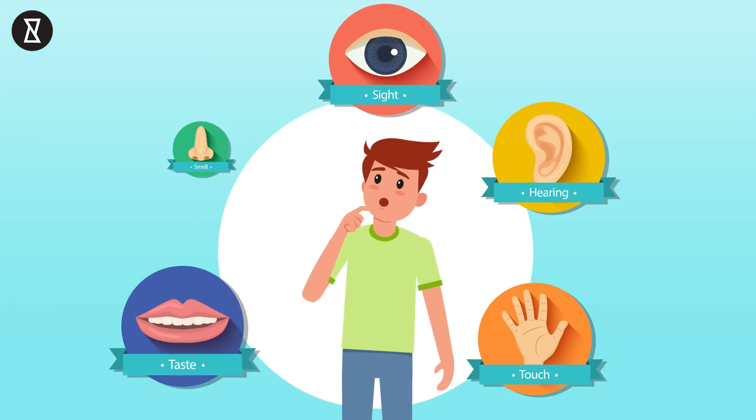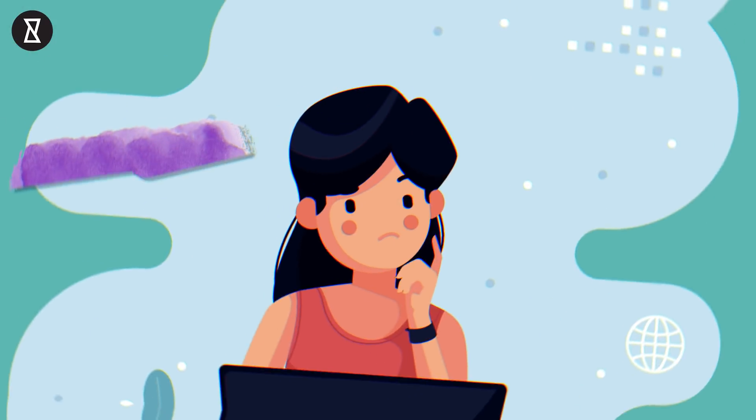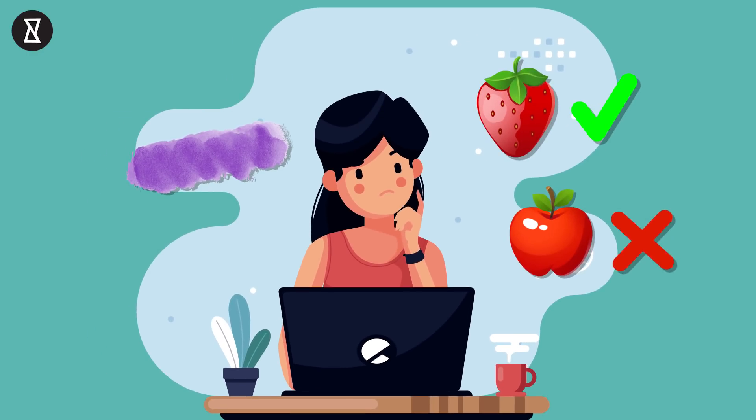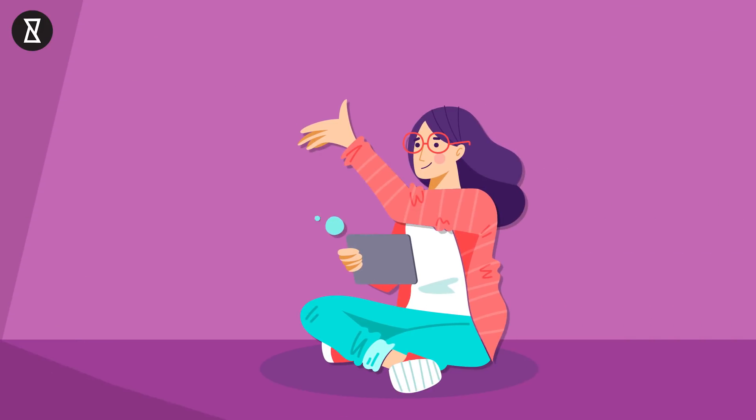The sensory mix-ups are always the same, which means the colour purple will always taste like strawberries and will not taste like apples on a different day to someone with that type of synesthesia. The secondary perception is usually more memorable than the primary one.